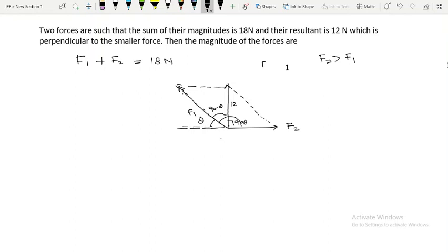Toh aap agar sochke dhekho iska aur iska dono ka resultant akar idhara hai. Toh is force ka ye wala component F1 cos theta must be equal to F2, tabhi toh ek dúsare ko cancel karayenge, resultant ye haan jayega. Dúsri baat, iska ye wala component F1 sin theta is equal to 12.